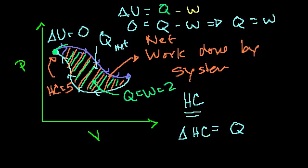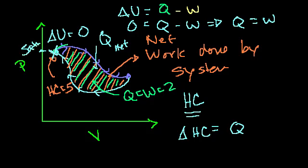Remember: in order to be a state variable, if you're at this point, you have to have the same value. If your internal energy was 10 here, when you do the path and come back, your internal energy will be 10 again — that's why internal energy is a valid state variable. It's dependent only on your state. If your entropy was 50 here, when you come back to this point, your entropy is once again 50. If your pressure is 5 atmospheres here, when you come back, your pressure will be 5 atmospheres. Your state variable cannot change based on what path you took.